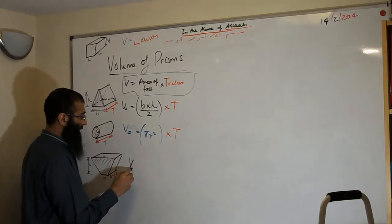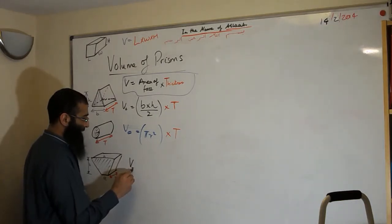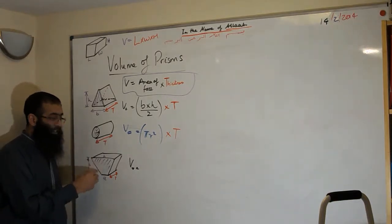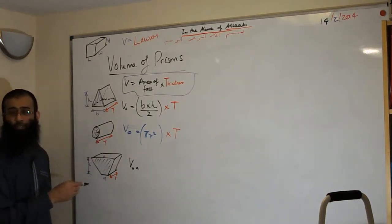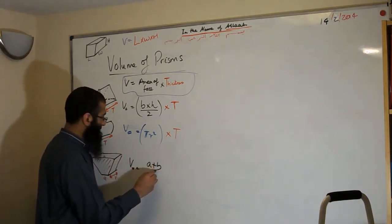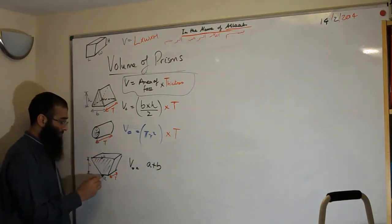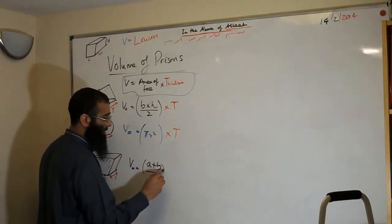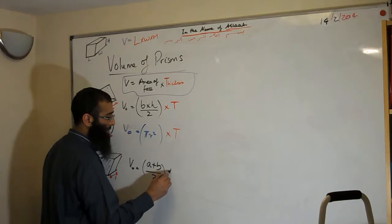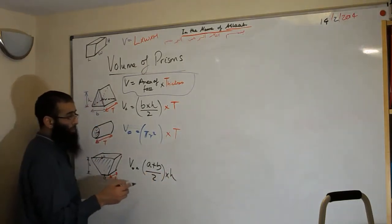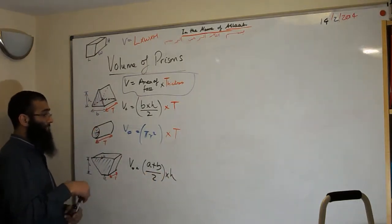The volume of this trapezoid prism — what is the area of the trapezium face? We add up the parallel sides, which are A and B, divide by two, then multiply by the height, and then multiply by the thickness.